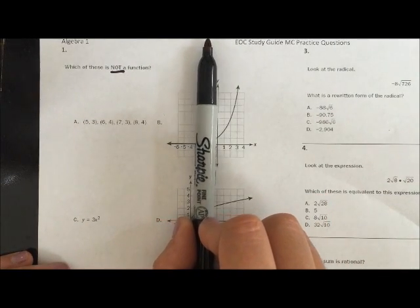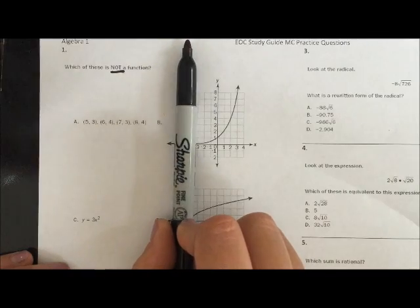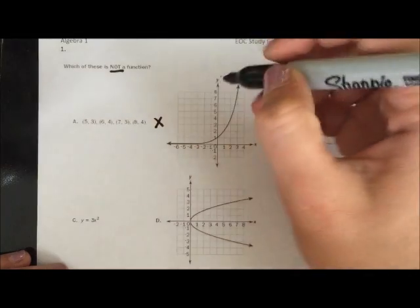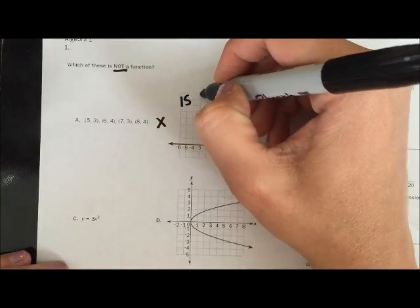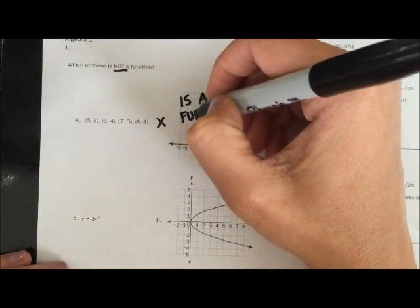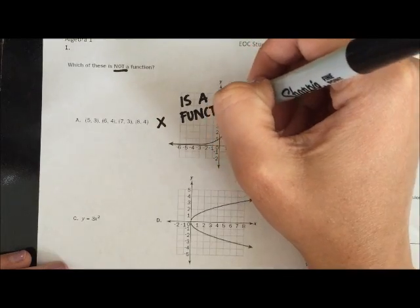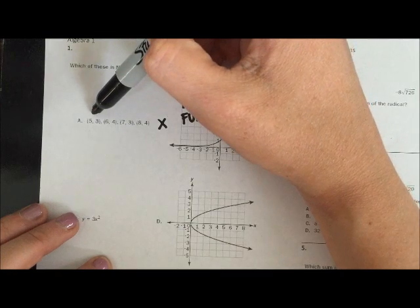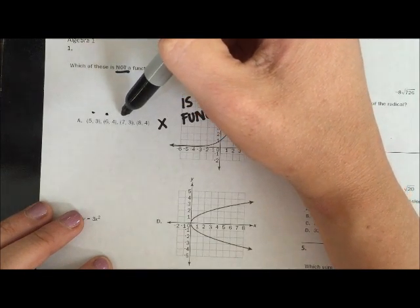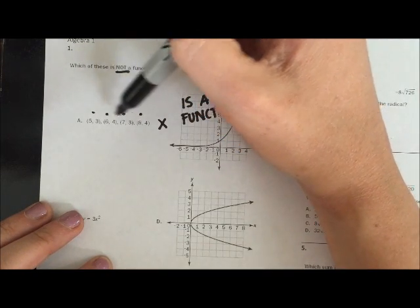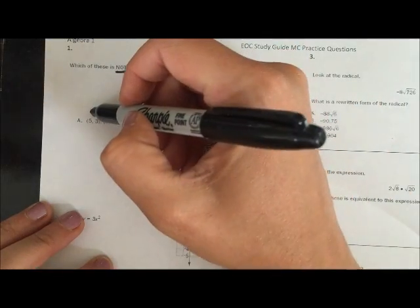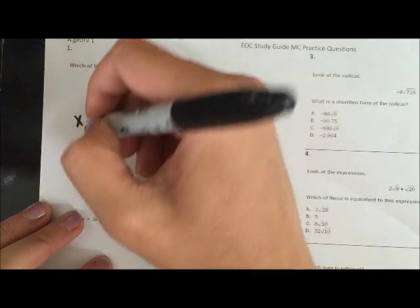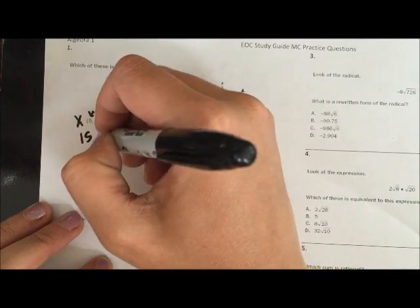B works. The function only touches my pen at one point in time the whole way around, so B would not be an option because B is a function. Let's see, another way to tell if something is a function: for every x value there should be only one y value. Well my x values never repeat so we're okay, so this one is not an answer. This is a function.